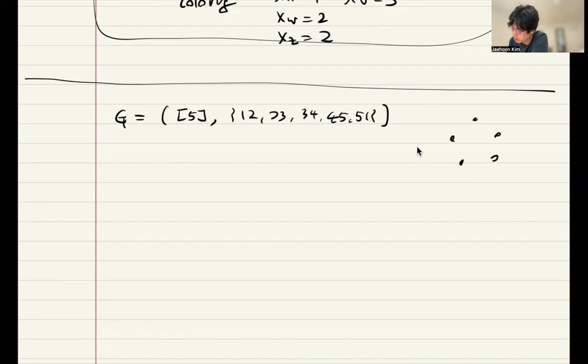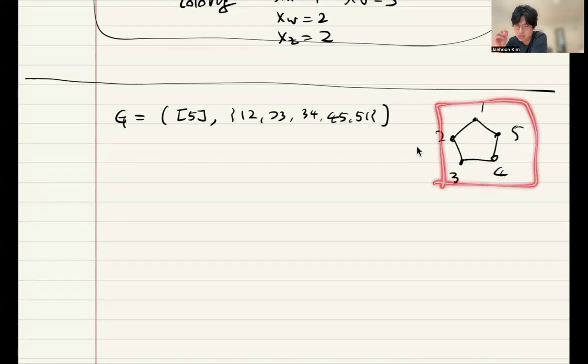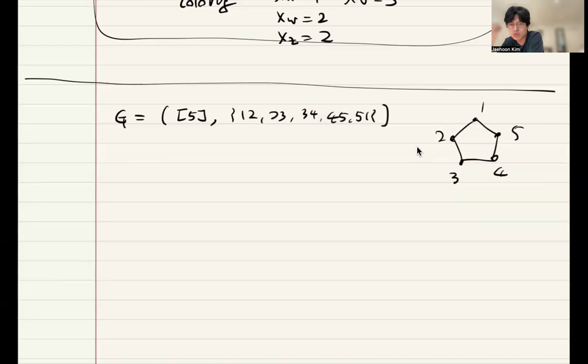How does it look like? You have 5 dots 1, 2, 3, 4, 5. You can already see that this drawing is more intuitive. You immediately understand how it looks like. It gives you some geometric intuition, while this doesn't give you much intuition.